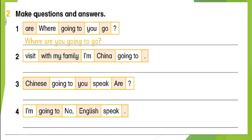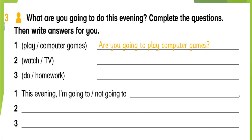Question number two: make questions and answers. Number one: 'Where are you going to go?' — 'I'm going to visit China with my family.' Numbers three and four are homework — you have to make the question and the answer. For example, question three: 'What are you going to do this evening?' Complete the questions then write your own answers. Number one: 'Are you going to play computer games?'